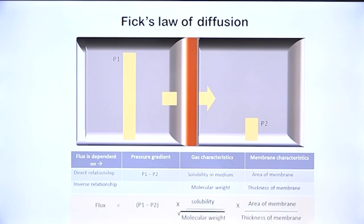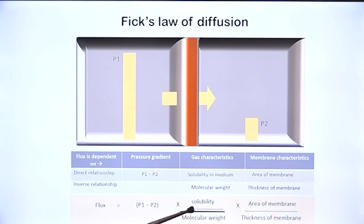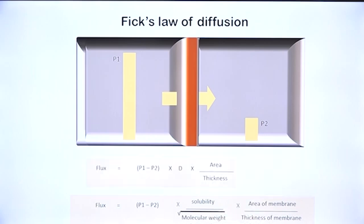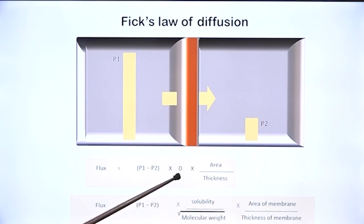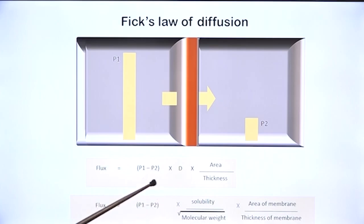When we write an equation for flux, it is the pressure gradient — the difference in gas concentrations on either side of the membrane — multiplied by solubility divided by the square root of molecular weight, multiplied by area of the membrane divided by thickness. This can be written more simply as the diffusion coefficient for the gas multiplied by the pressure gradient.